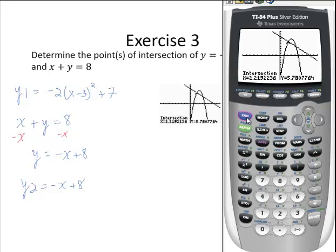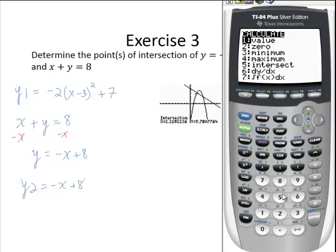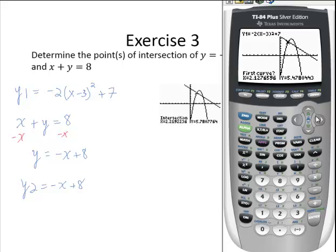Running the command again. Second calc, fifth option. And now I'll move to the right and get close to the other point of intersection, and again hit enter three times. And there's my second point of intersection.